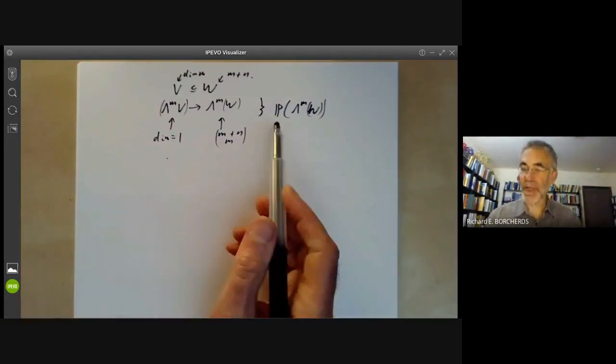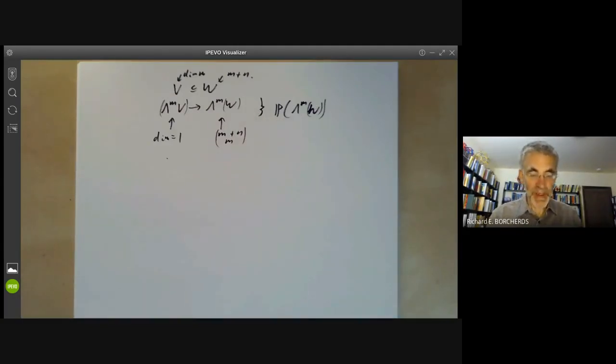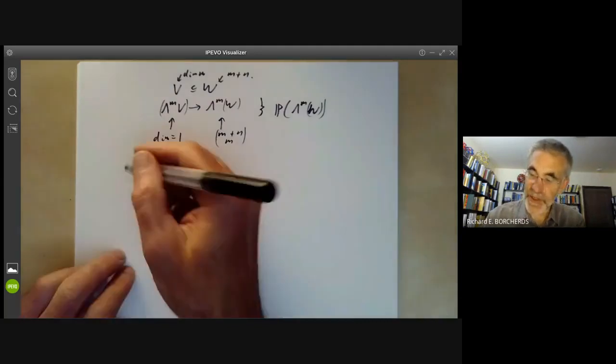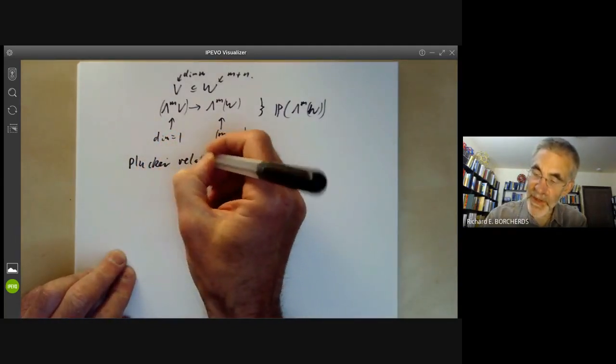Well, of course, this map isn't onto the whole of projective space. We need some Plucker relations. The Plucker relations look like this.